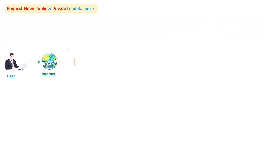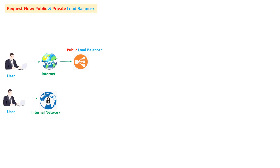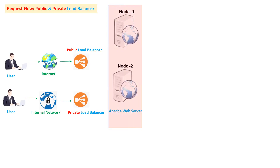This is the high availability flow when using a JBoss cluster with two servers. Now let us discuss a scenario with a public and private load balancer. A user accessing a website from the internet uses a public load balancer — your website is accessible from the public network. At the same time, other users accessing from an internal or private network use a private load balancer. You configure two load balancers: one for public requests exposed to the internet, and one for the private network restricted to internal traffic only.